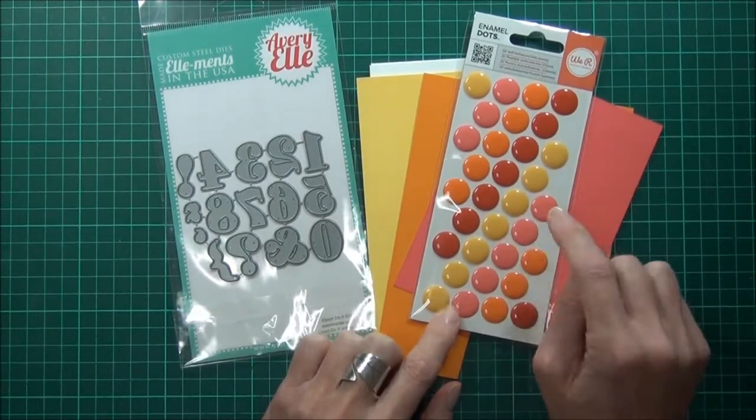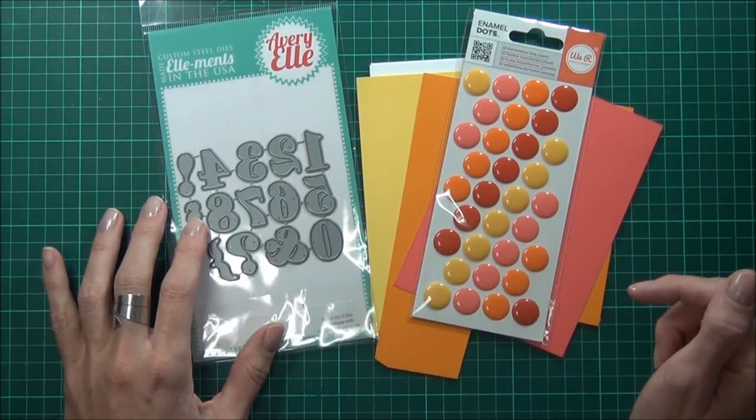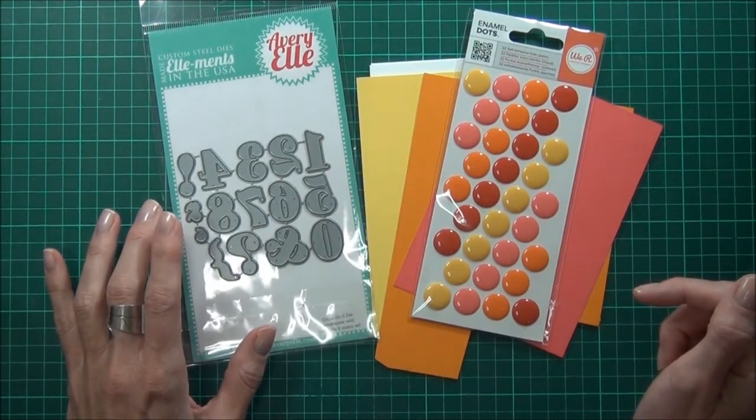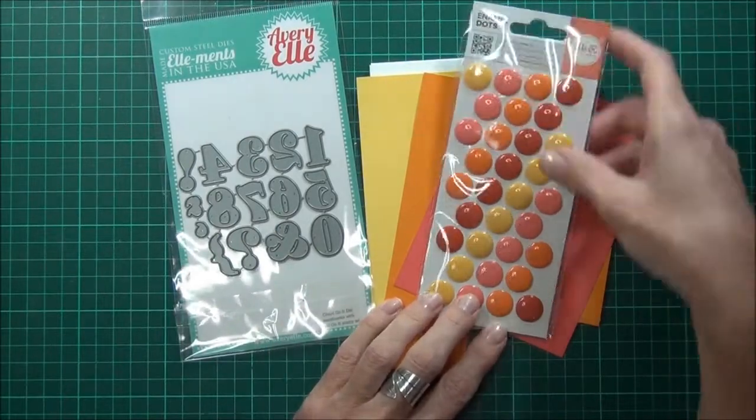They're really nice and large. I love the bright colors. I think this one's called Warm. This new die is from Avery Elle and it's called Count On It, and there is actually a matching stamp set.